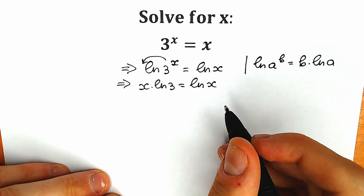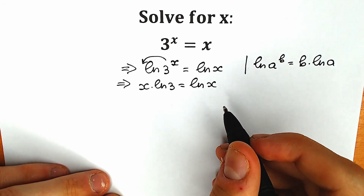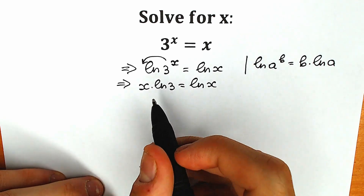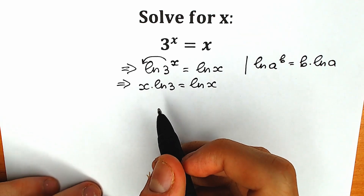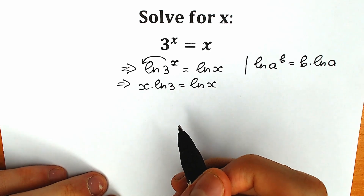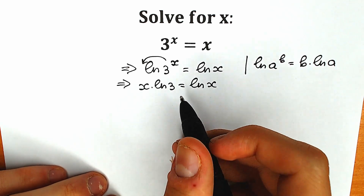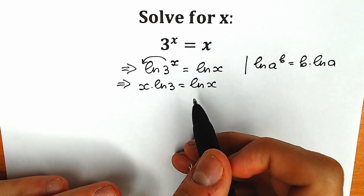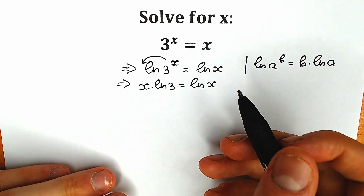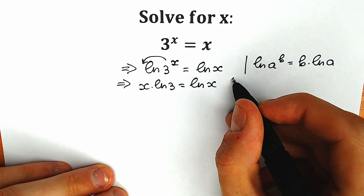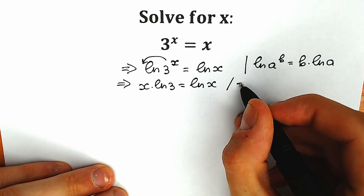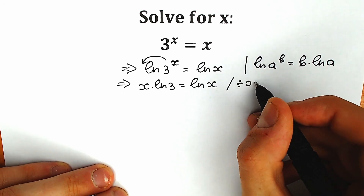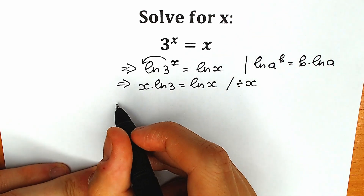This is our first step. What are we going to do next? Let's divide both sides by x. Before this, let's just go ahead and divide both sides by x — this is better for you to do right now.